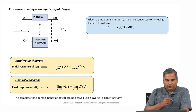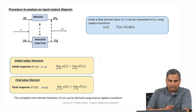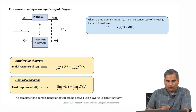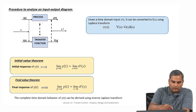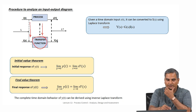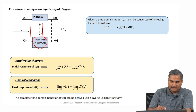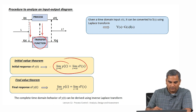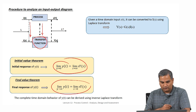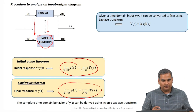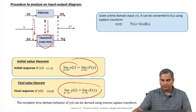Putting this all together, the procedure to analyse an input-output system is: take the input I(t), get its Laplace transform I(S), multiply by the transfer function to get Y(S) = G(S)·I(S), use the initial value theorem for the initial value of y(t), use the final value theorem for the steady-state value, and so on. This is how a time domain problem is converted to a frequency domain problem in process control. With this I will end lecture 12; see you in the next lecture.